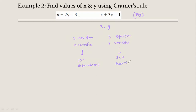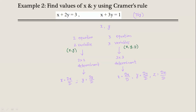For three equations and three variables, you will find x using Dx upon D, y using Dy upon D, and z using Dz upon D. It will be a simple method — just form the determinants properly step by step and you will get the right answer. We will meet in the next video.